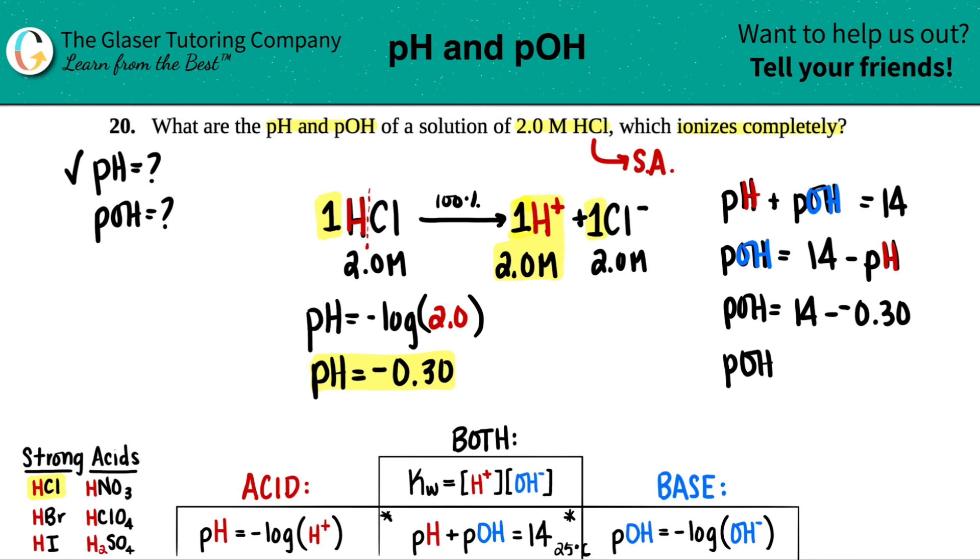So now here we go. pOH equals 14 minus a negative 0.30. So pOH is also off the charts because technically it should end at 14, but this one is a little bit more, just indicating that it's ridiculously acidic. High numbers on the pOH scale represent acid. And that's it. Those are your two answers.